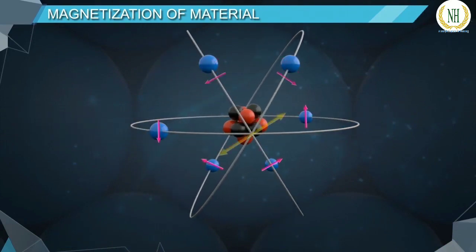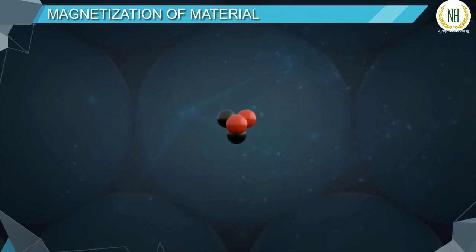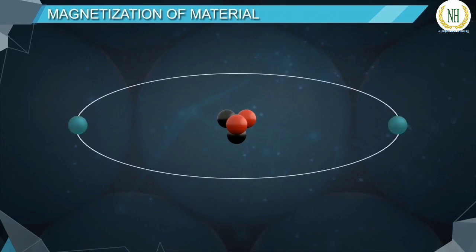The resultant magnetic moment of an atom is the vector sum of all the magnetic moments in an atom. It depends on the number of unpaired electrons in the atom. Some atoms contain paired electrons in all their orbitals. For the sake of understanding, let us consider the helium atom, which contains only one pair of electrons.